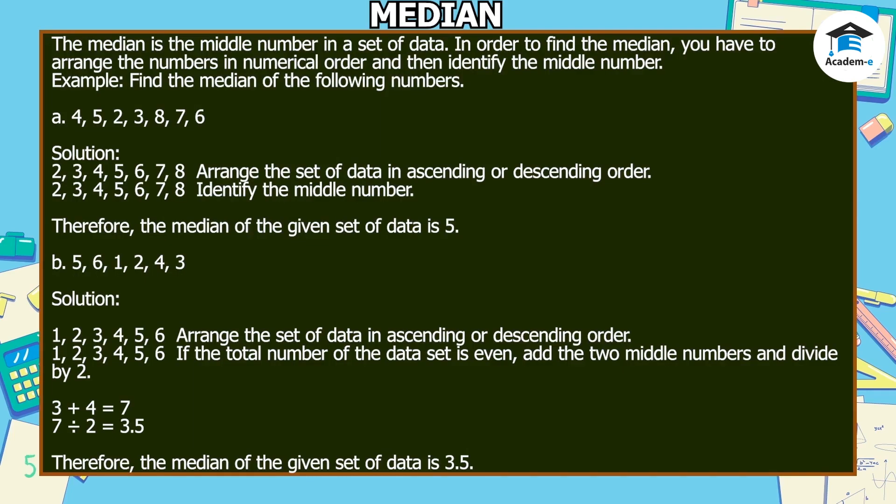Median: the median is the middle number in a set of data. In order to find the median, you have to arrange the numbers in numerical order and then identify the middle number. Example: find the median of the following numbers — 4, 5, 2, 3, 8, 7, and 6.